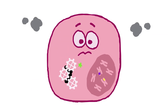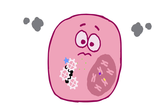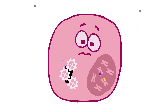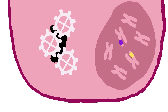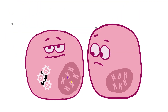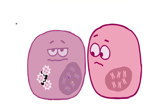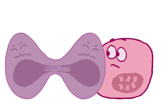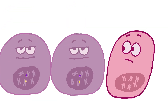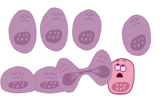This mutated enzyme interferes with the healthy functioning of the cell and results in a buildup of another protein called 2HG. Having high levels of 2HG can impact how a cell functions and matures. This may lead to a growing cluster of immature cells that form a tumor.